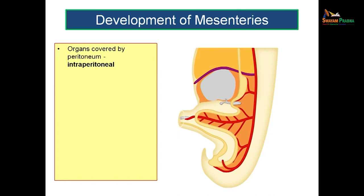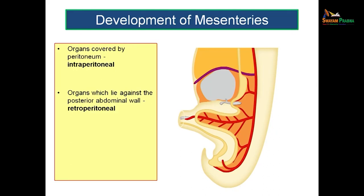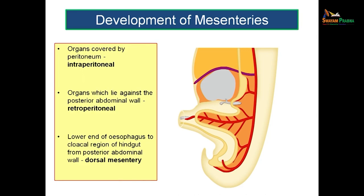Organs covered by peritoneum are called intraperitoneal, and organs lying against the posterior abdominal wall — just covered on one aspect — are called retroperitoneal. Intraperitoneal does not mean the organs are within the peritoneal cavity; just as the heart is not inside the pericardial cavity and the lung is not inside the pleural cavity, the abdominal organs are not inside the peritoneal cavity. Retroperitoneal means structures have moved to the posterior abdominal wall so that one aspect has no peritoneal relation — only one surface is related to peritoneum, and it appears as if the structures lie behind the peritoneum.